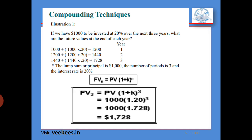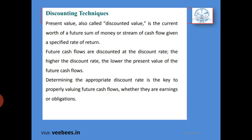Discounting technique has already been discussed. We will convert the future value into present value. Discounted value: PV = Amount × PVF (present value factor). We will multiply the present value factor.